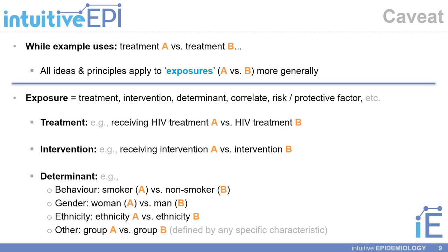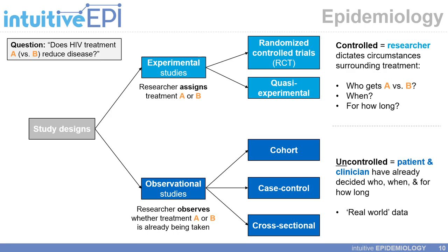I wanted to introduce you to study designs in epidemiology. At the top we have experimental studies, primarily focused on randomized controlled trials, or RCTs. In experimental studies, the researcher assigns treatment — the researcher decides who gets treatment A versus who gets treatment B. They are controlled because the researcher dictates the circumstances surrounding treatment or exposure status: who gets A versus who gets B, when, and for how long. At the bottom, we have observational studies, where the researcher observes whether treatment A or B is already being taken in the real world.